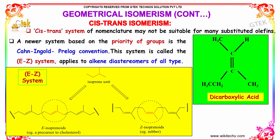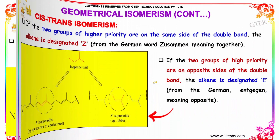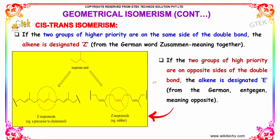The cis-trans system of nomenclature may not be suitable for many substituted olefins. A newer system was developed based on the priority of groups, called the Cahn–Ingold–Prelog convention. This system is called the E/Z system and applies to alkene diastereomers of all types. If the two groups of higher priority are on the same side of the double bond, the alkene is designated Z; if they are on opposite sides, it is designated E.